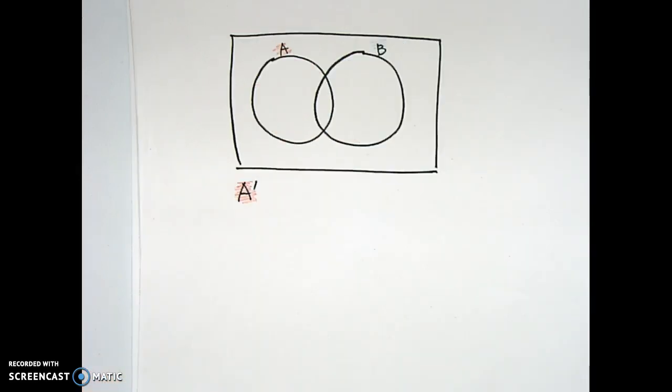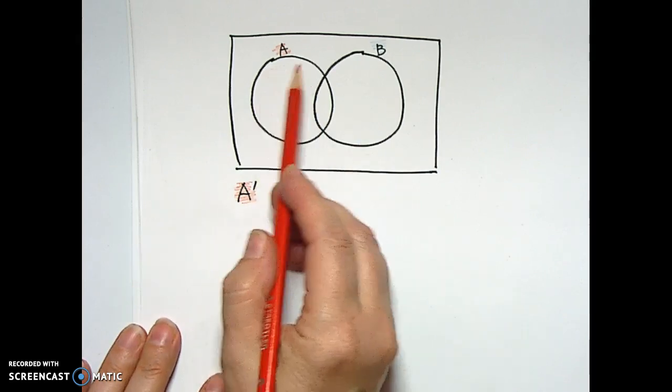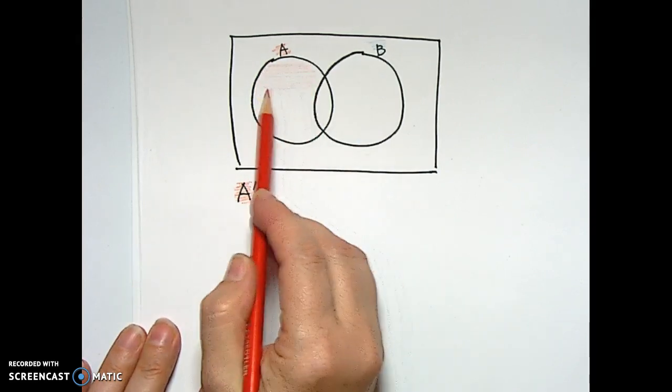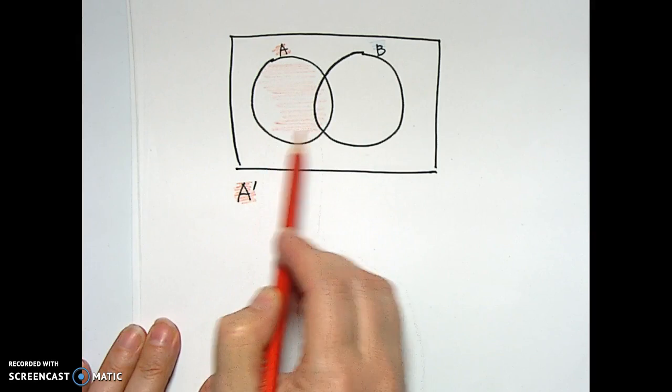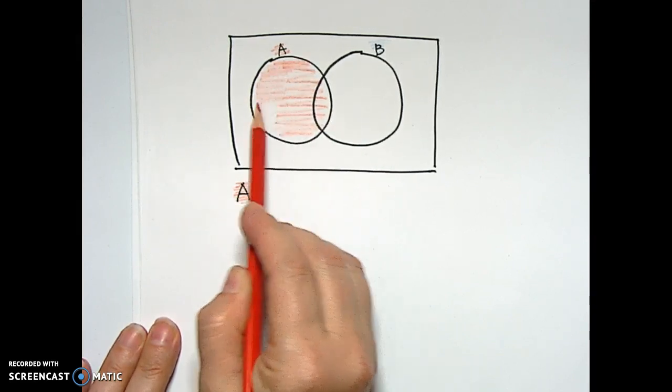The last basic operation we're going to do in this video is complement, which is this little apostrophe thing, kind of like a quotation, not a quote, like Joe's shoes, the apostrophe you put there. It kind of looks like that, but it's called complement.